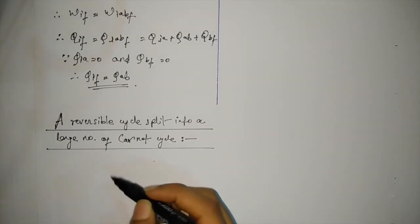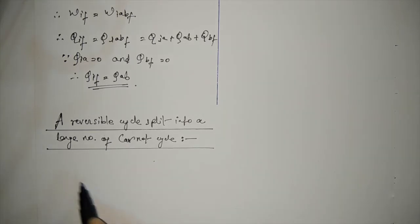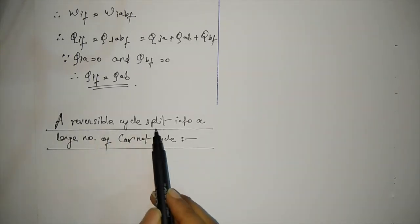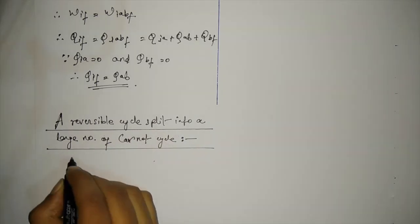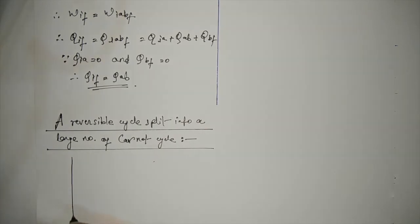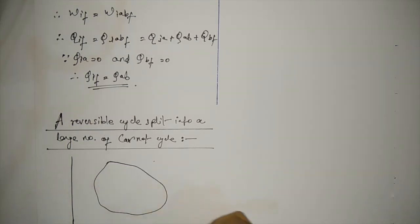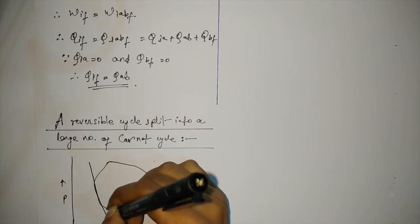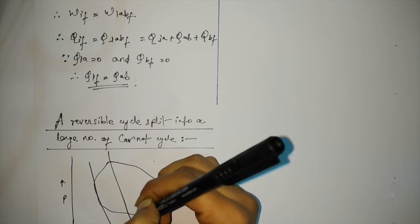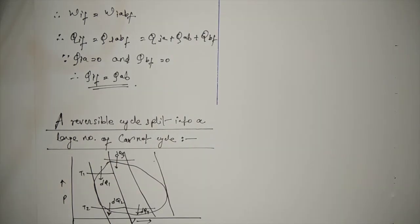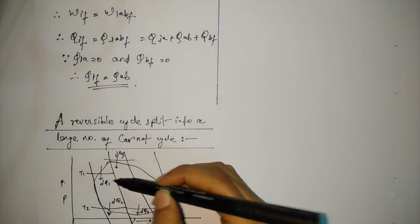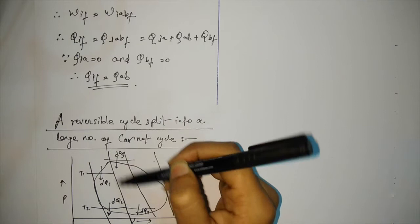Now let us see the derivation of the entropic process. Here we will represent a reversible cycle and split it into a large number of Carnot cycles. Let this be a PV curve, and let us divide it — as you can see, I have completed the PV diagram by dividing this reversible cycle and splitting it into many Carnot cycles.